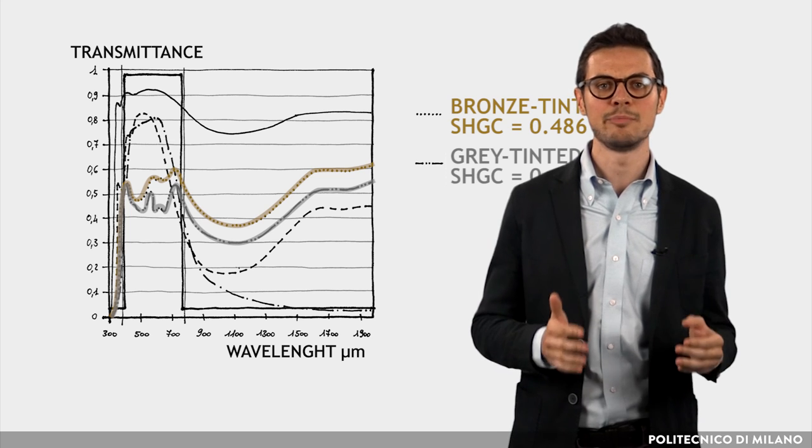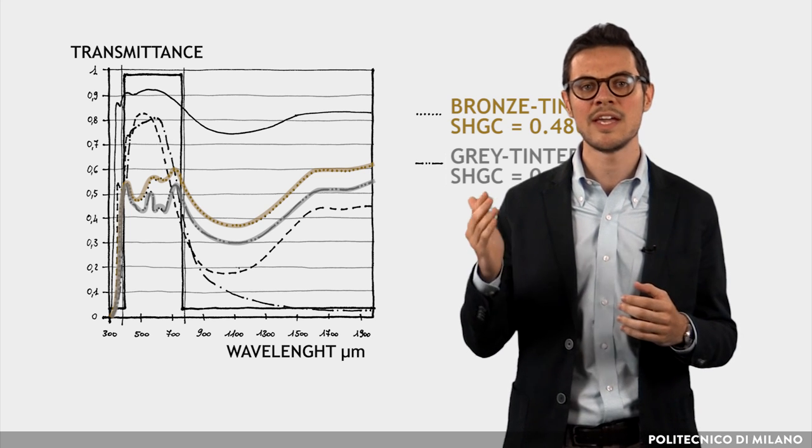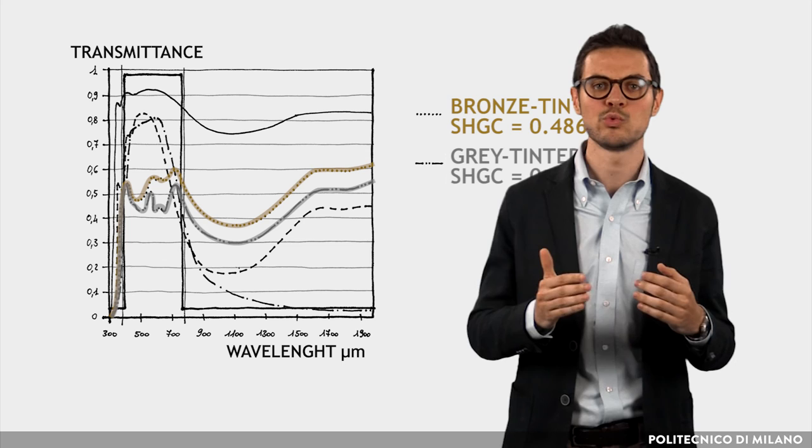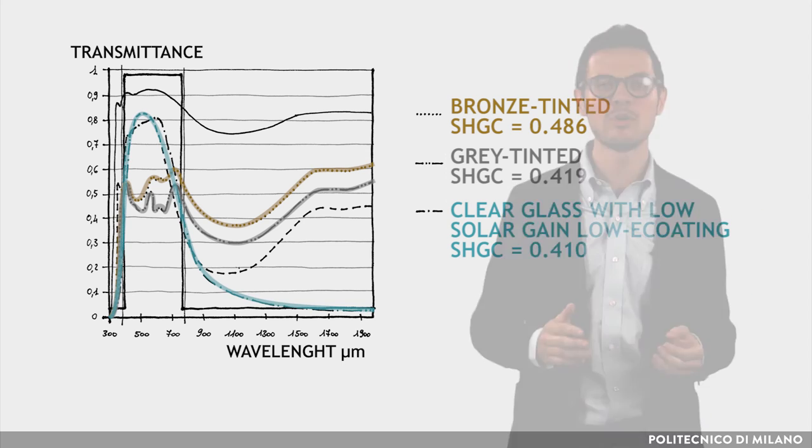In order to alleviate the problem of high solar gains in buildings with large windows areas, a type of spectrally selective glass has been developed, which has the capability of attenuating the infrared component of the solar spectrum while maintaining good transparency to visible radiation.